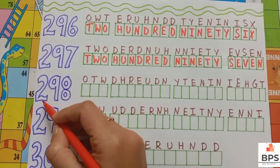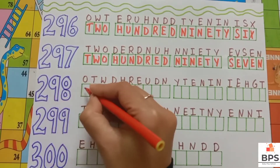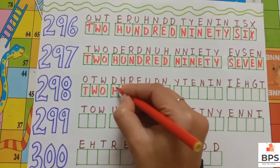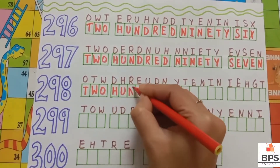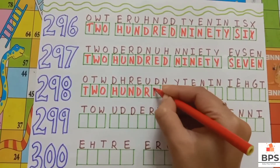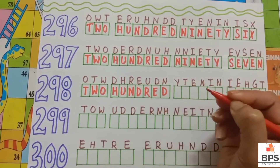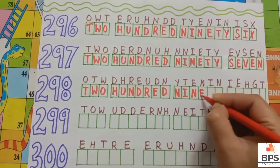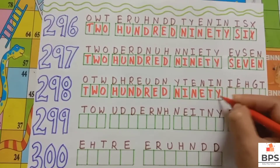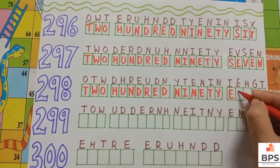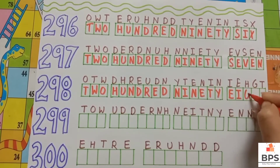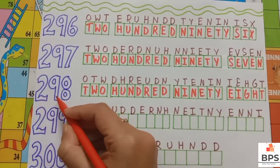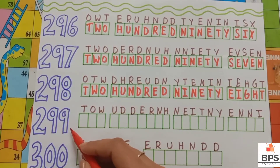Two nine eight. Two hundred ninety eight. T-W-O, two. H-U-N-D-R-E-D, hundred. N-I-N-E-T-Y, ninety. E-I-G-H-T, eight. Two hundred ninety eight.